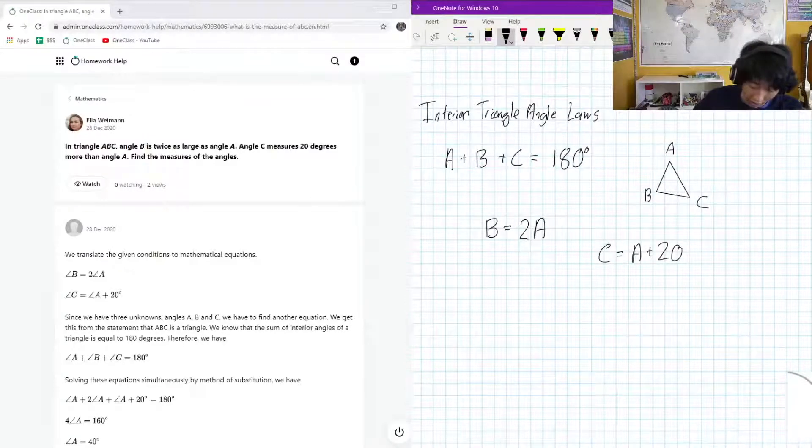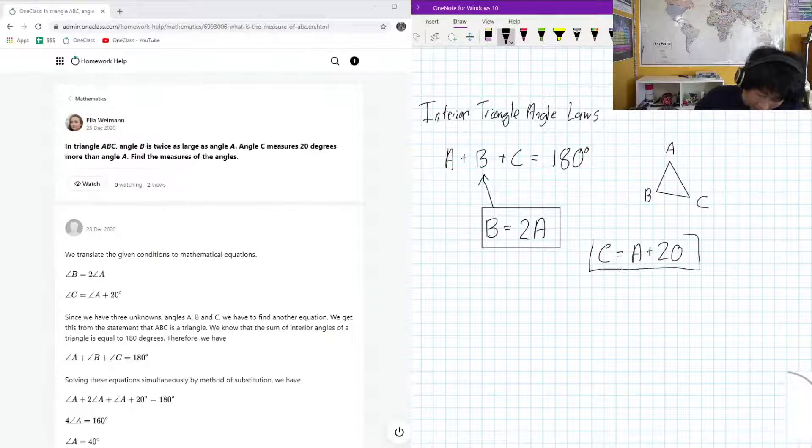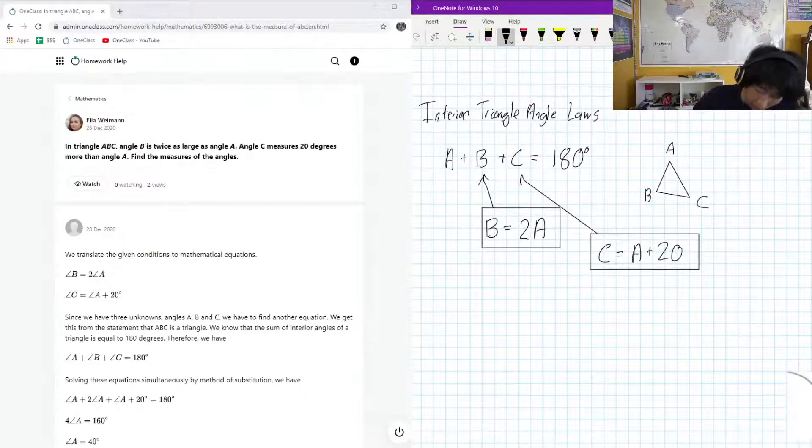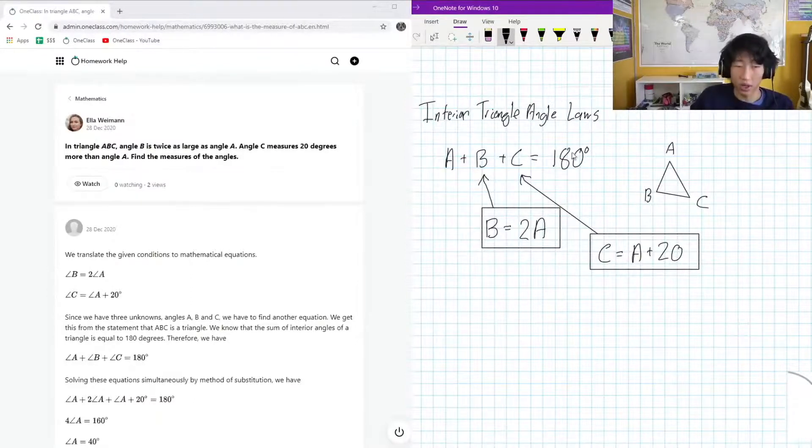So how about, you see right here, what if we sub this into the equation, and we also sub this into the equation? Then we're only going to have the term A in the equation, and we'll be able to solve for that. So let's make these substitutions and solve for A.